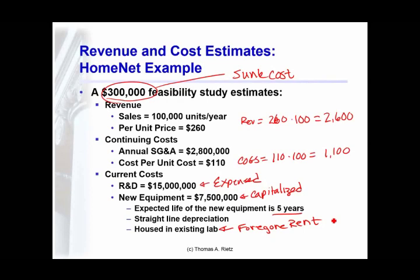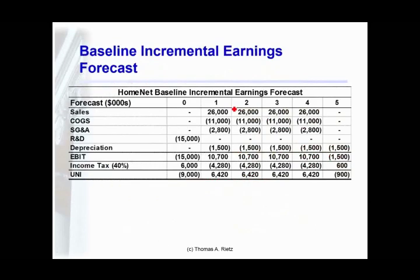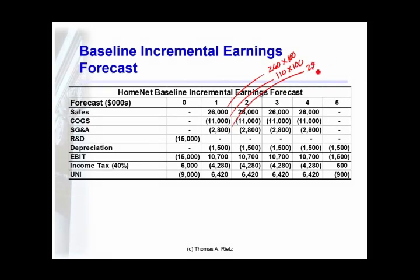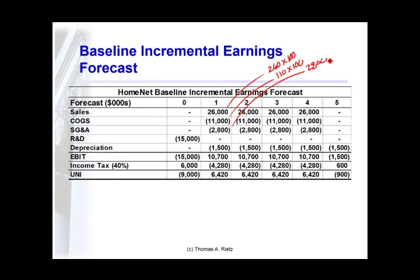So we'll do two cuts at cash flows. The first one is simply the incremental cash flows resulting from this project, then we'll incorporate the foregone rent and cannibalization effects. The first cut: sales of $2.6 million ($260 in revenue, 100,000 units), cost of $110 times 100,000 units, and the SG&A that's fixed for the life of this project — specifically the direct SG&A, nothing truly general and fixed — these are the product support expenses for this particular project.